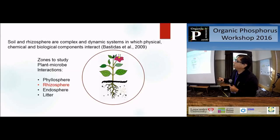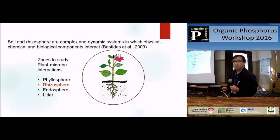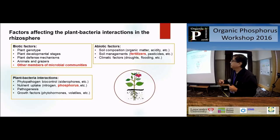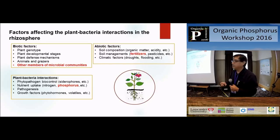The soil and rhizosphere is a complex and dynamic system in which physical, chemical, and biological components interact - it's a very complex environment. There are many factors that can affect it. Some of the main factors in the literature are biotic factors, like plant genotype, plant stage, development stage - it's very important - plant defense mechanism, animal and grazer. Also the microbial community interacts with the rhizosphere.